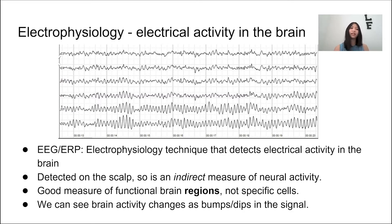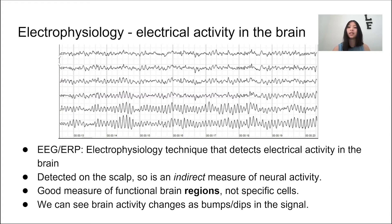One of the biggest advantages to EEG and ERP is its temporal resolution — we get to see brain activity in almost real time. Today's EEG technology allows us to detect brain activity within a single millisecond or even less. It's also great to measure functional brain regions and see the general areas of active brain regions during specific tasks.